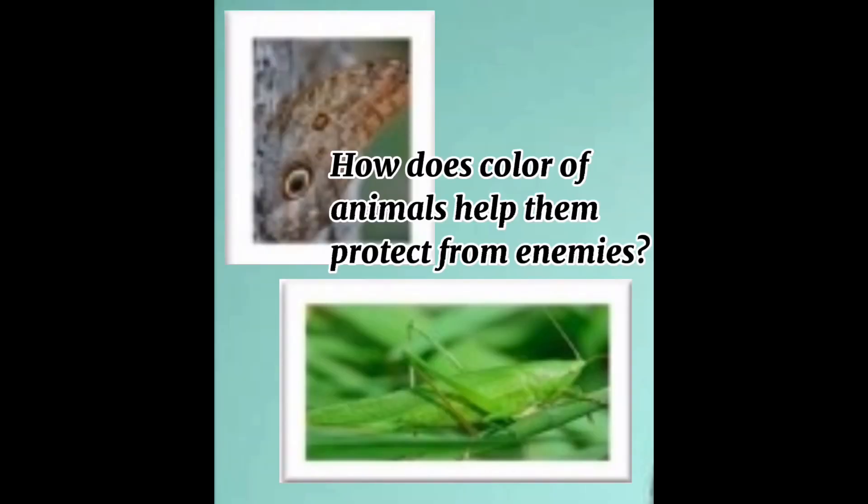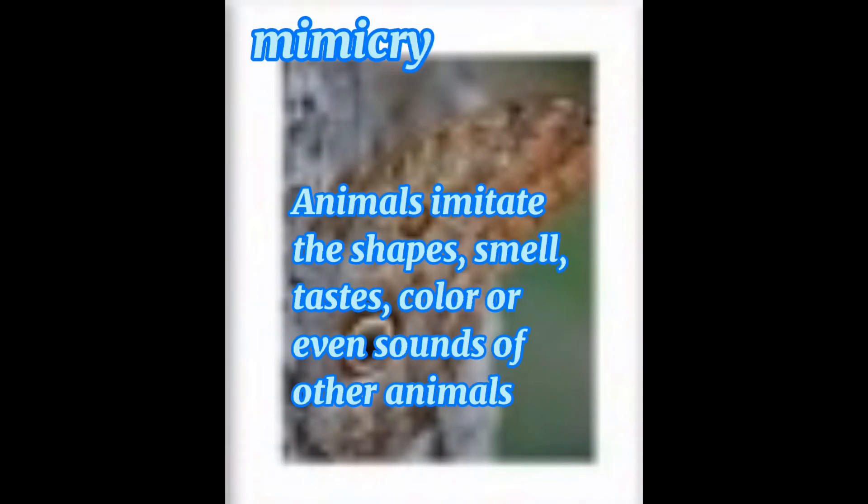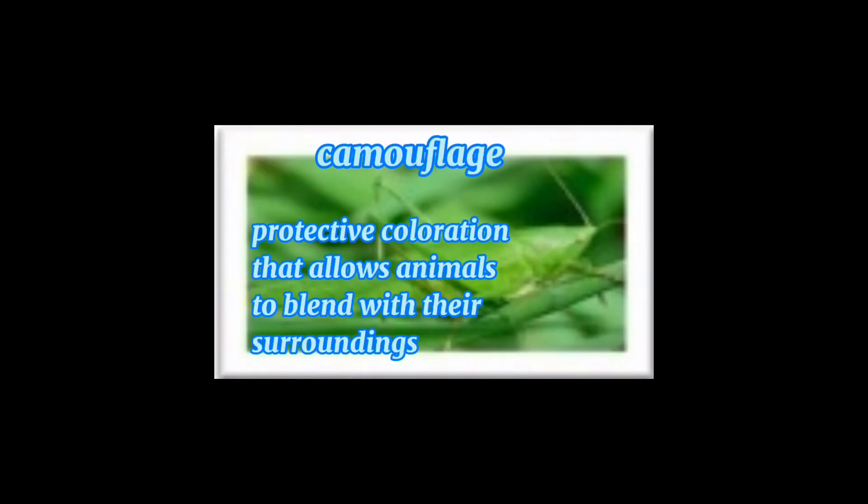How does the color of animals help them protect from enemies? Animals use camouflage and mimicry. Animals imitate the shape, smell, taste, color, or even the sounds of other animals.